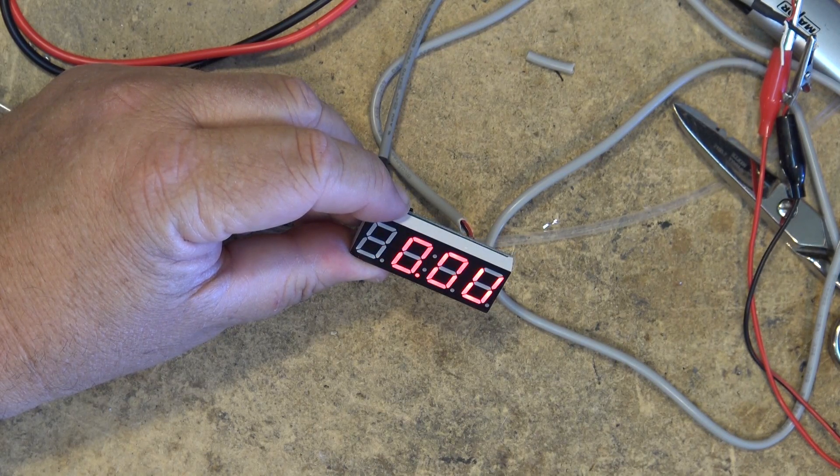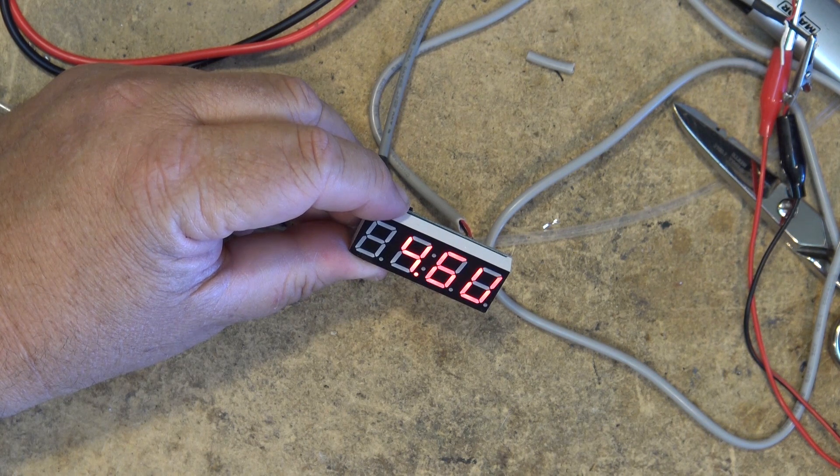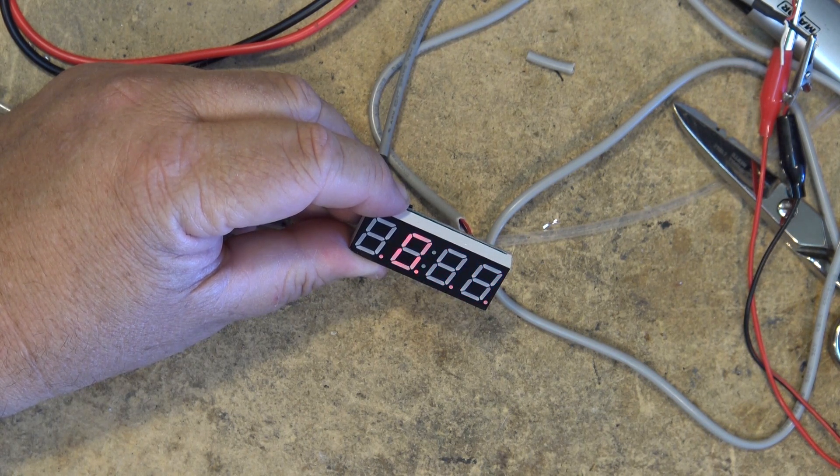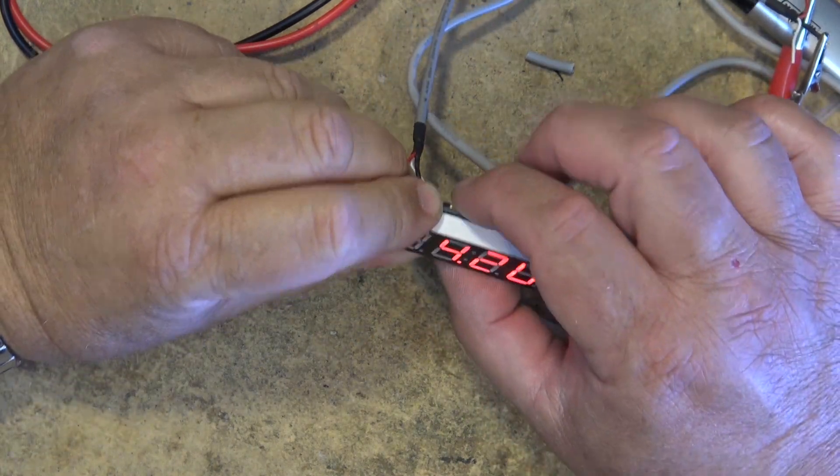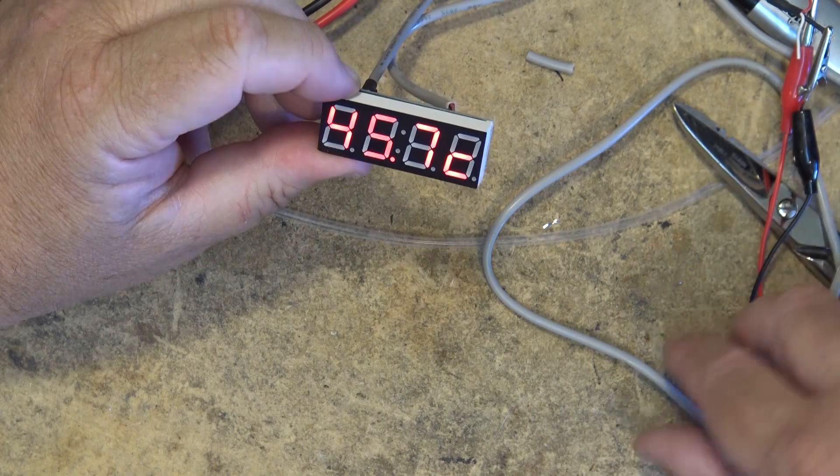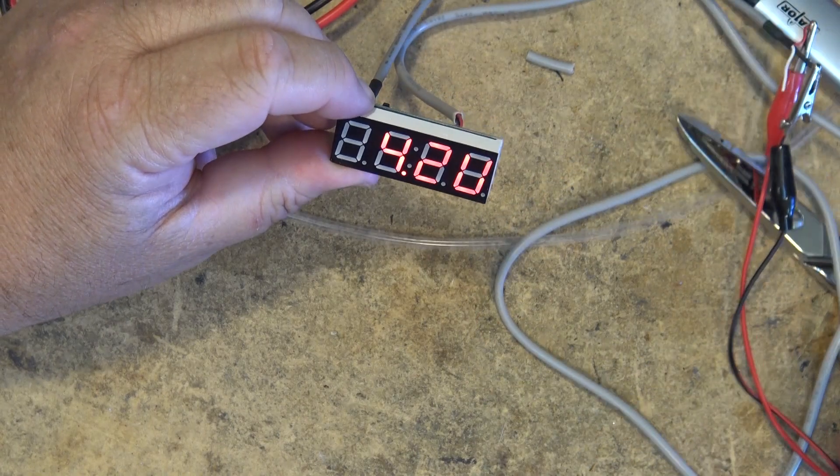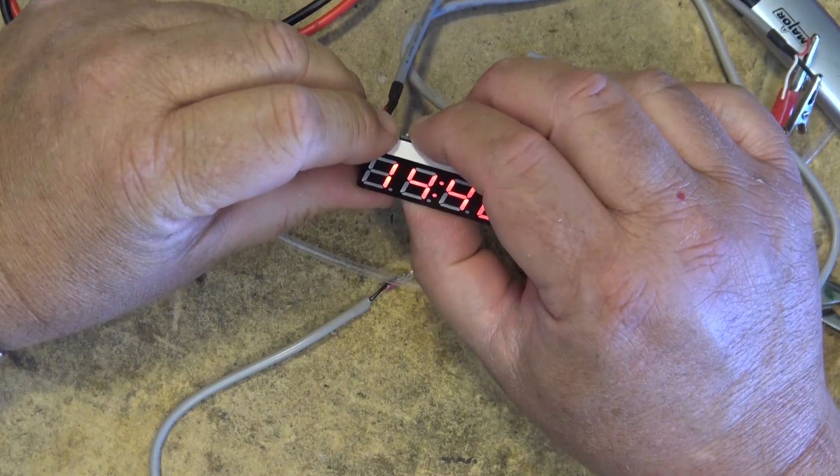So just power the unit up to my variable power supply, never see what voltage. It'll go down to about 3.8 volts before it shuts down. And look at the temperature, the probe is still warm from me heating it up there. Let's give it a few minutes to cool down a bit here.